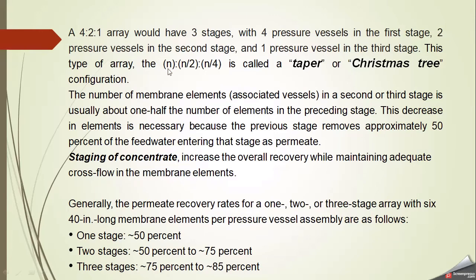This type of array can be generalized as n, n/2, n/4 where n is a whole number. This arrangement is called a taper or Christmas tree configuration. The number of membrane elements in a second or third stage is usually about one half the number of elements in the preceding stage. This decrease is necessary because the previous stage removes approximately 50% of the feed water as permeate, so only half the water enters the next stage. Reducing pressure vessels maintains the required cross-flow pressure, and this staging of concentrate increases overall recovery while maintaining adequate cross-flow in the membrane elements.